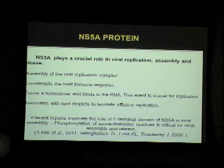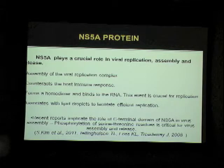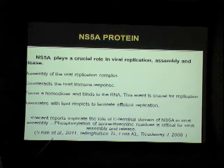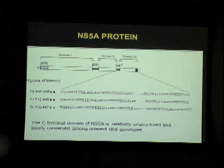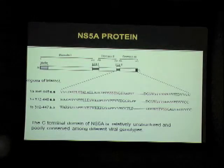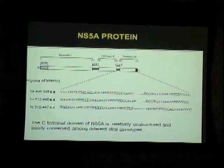NS5A also forms a homodimer and binds to RNA, which is crucial for replication. Another interesting area of research is that it associates with lipid droplets to facilitate efficient replication. Recent reports on the NS5A C-terminal domain state that the C-terminal domain is essential for virus assembly, and that phosphorylation of certain critical serine-threonine residues is crucial for assembly and release. Driven by these reports, we decided to focus on domain 3 of NS5A, which is the C-terminal domain. It is relatively unstructured and is poorly conserved among different viral genotypes, making it extremely worthwhile to study its function in the viral life cycle.